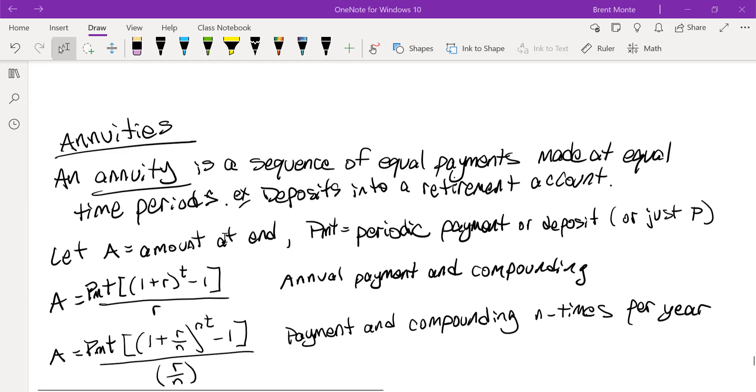Let A equal the amount at the end that we're going to end up with, and PMT is the periodic payment or deposit we make. Sometimes they just list that as P instead of PMT. I'm going to try to stay with PMT to separate it from what we did with the P that was just the initial deposit when we did either simple or compound interest.